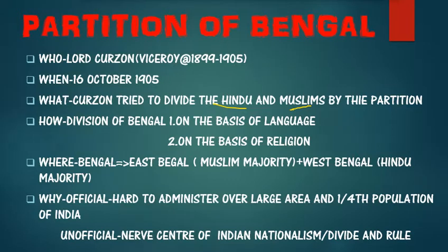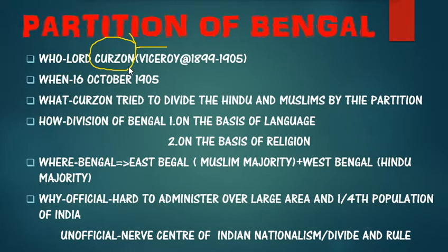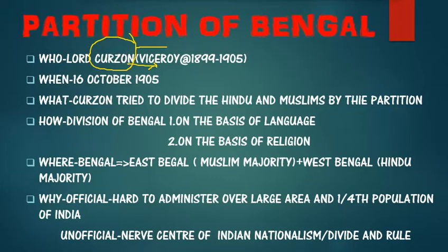To correlate the name Curzon: in Hindi, Curzon sounds like 'Krur', meaning cruel, and in English Curzon may be considered as 'cruel Viceroy'. So both 'Krur' and 'cruel' are synonymous with each other and with Curzon. Curzon took many policies that divided India, and he introduced the University Act in 1904 along with different policies to enhance British control over India.